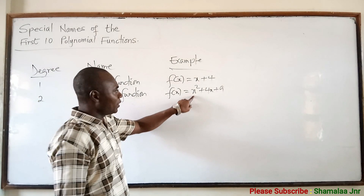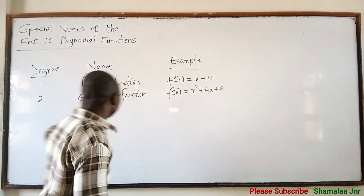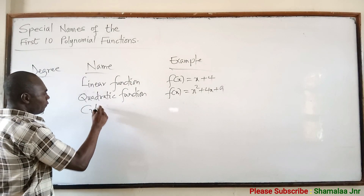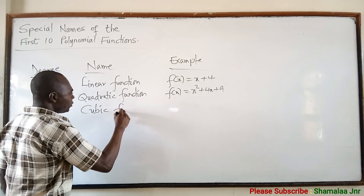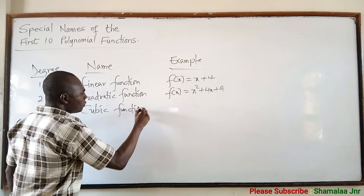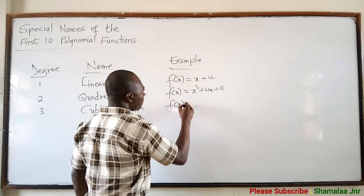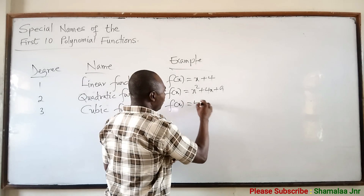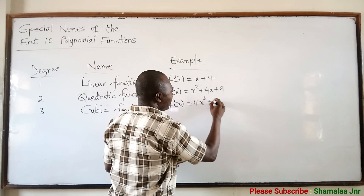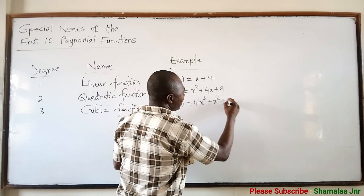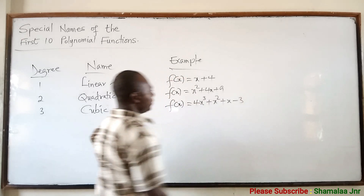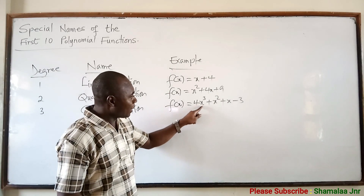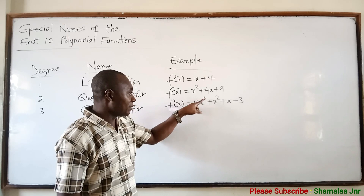Now when the degree is 3, then we say that it is a cubic function. You can do an example such as f(x) = 4x³ + x² + x − 3. You can give as many examples as you want — the most important thing is that the highest power should be 3.